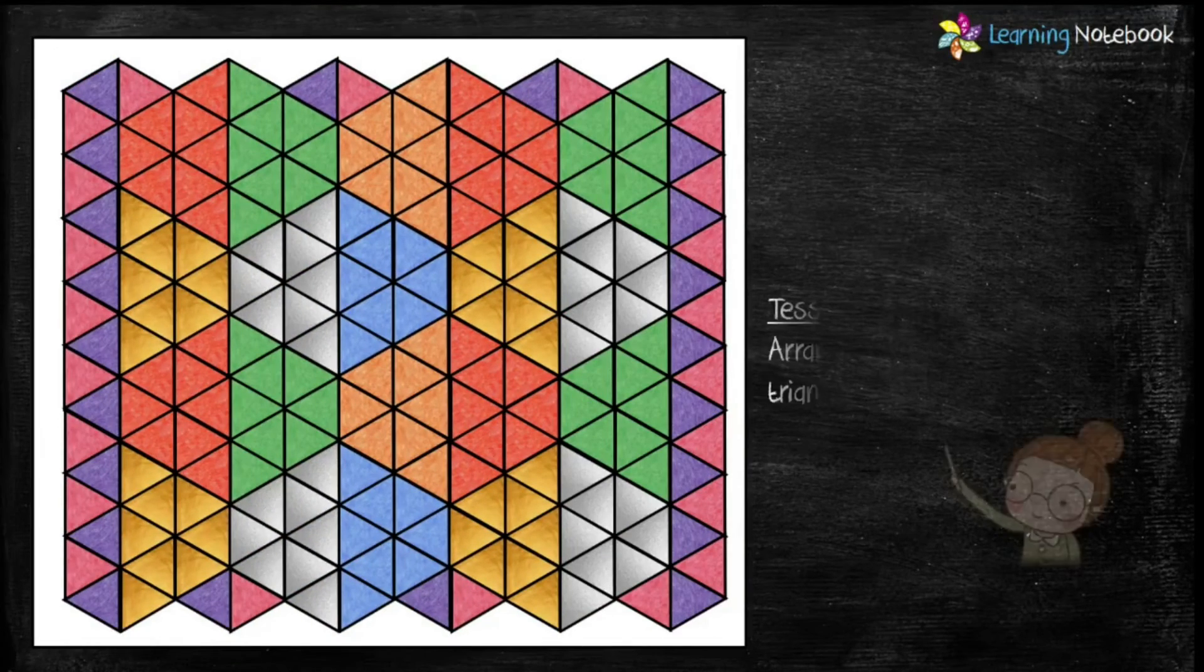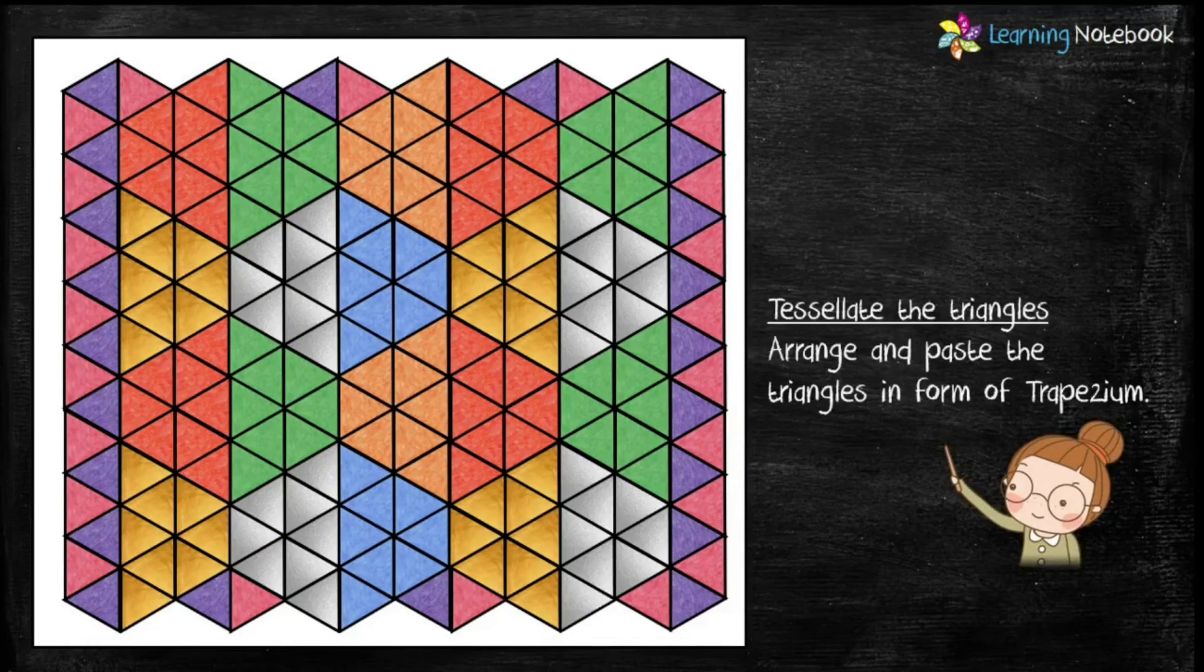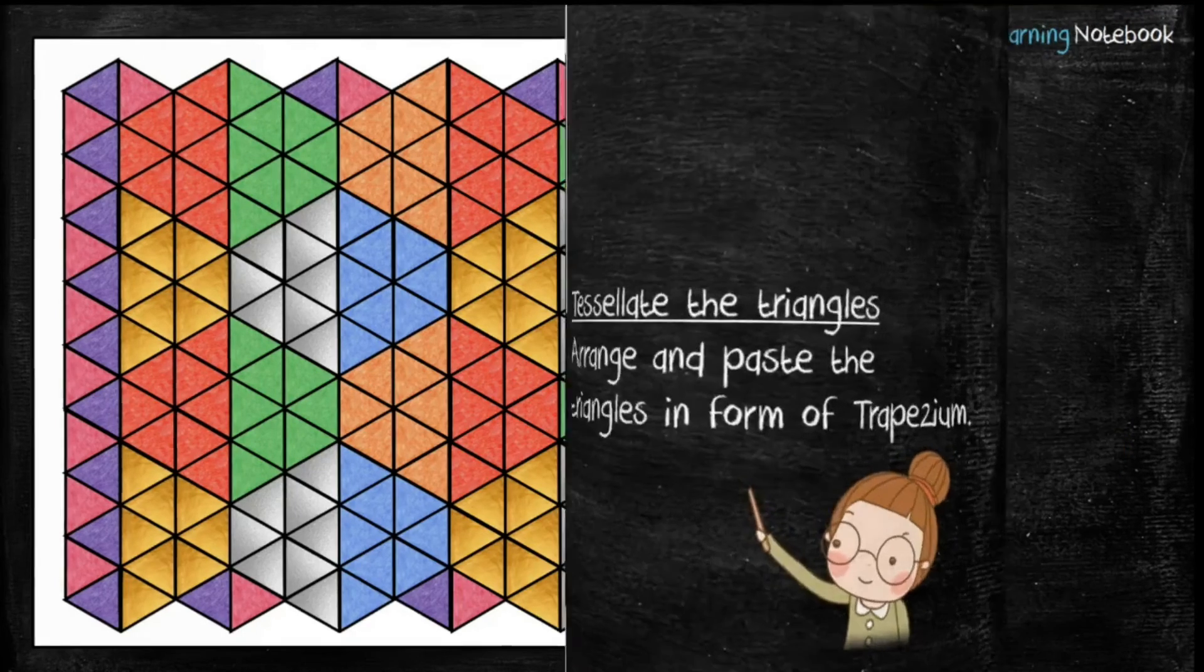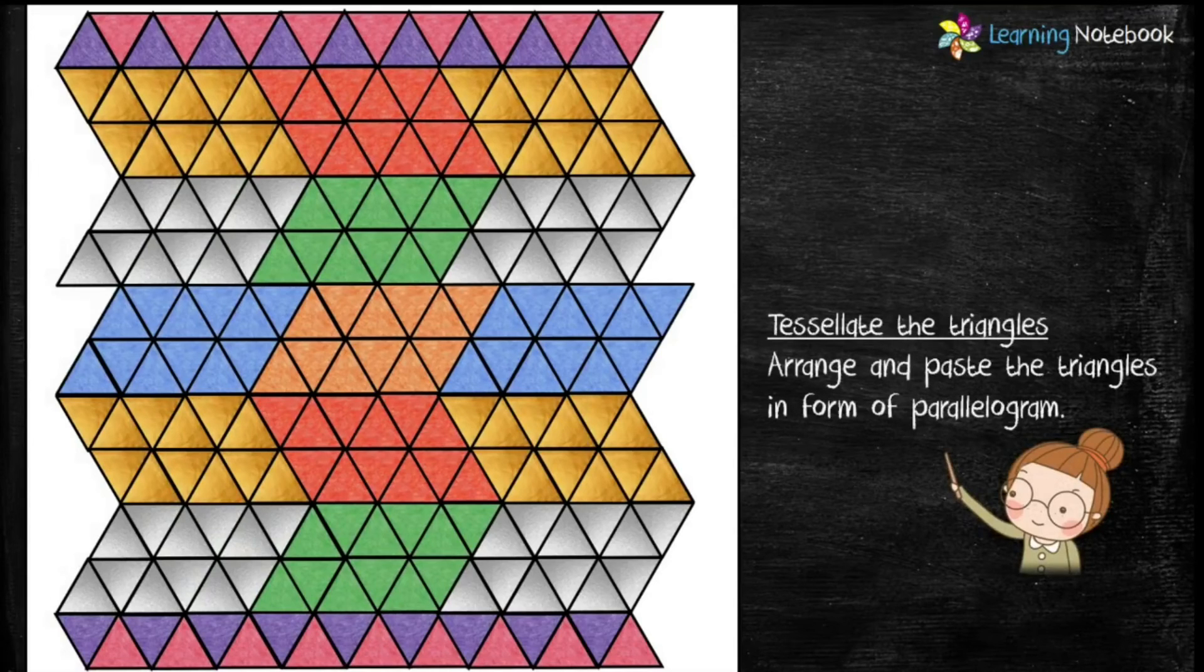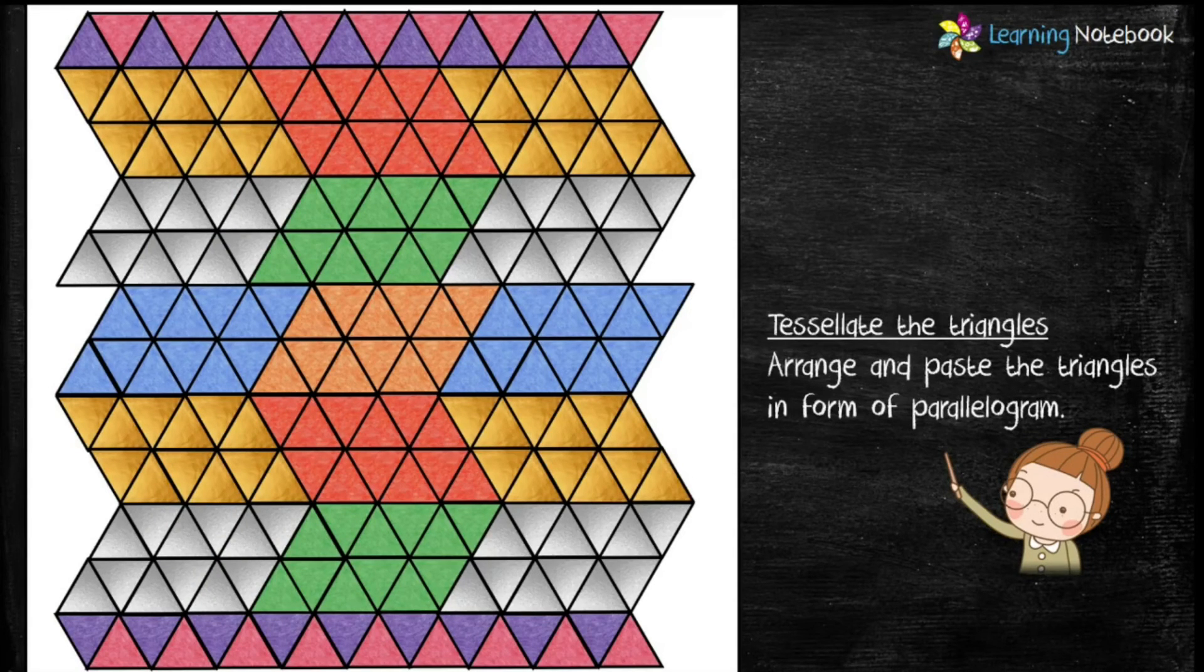You can also arrange and paste these equilateral triangles in the form of trapezium or a parallelogram or even a rhombus. So, I hope you must have understood why shapes tessellate and how to make beautiful tessellation using equilateral triangles. So, do try this interesting and creative activity to learn mathematics in a fun way.